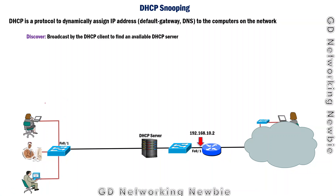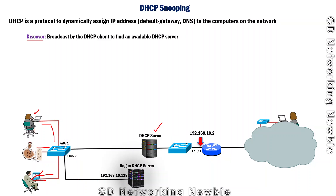Now suppose any user that needs an IP address sends a Discover message, which is broadcast on the local network to all nodes. That user will be expecting an Offer message from the DHCP server. But suppose that instead of the legitimate DHCP server, there is a hacker in the network who has plugged in a computer running DHCP software. This is a rogue DHCP server, which is not the actual legitimate DHCP server.